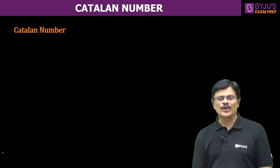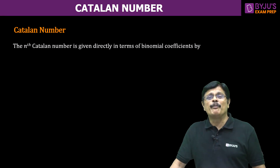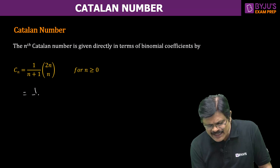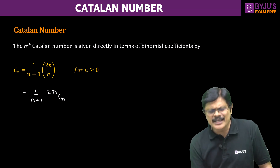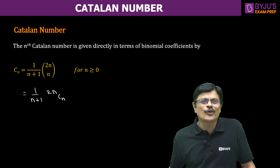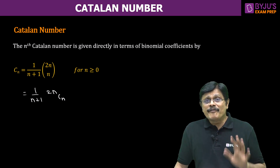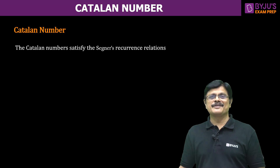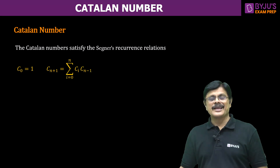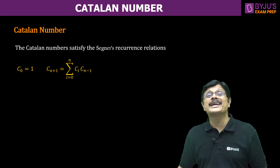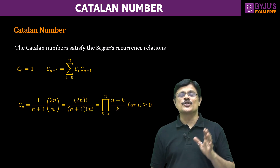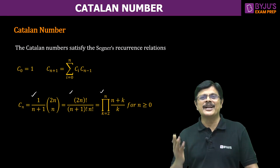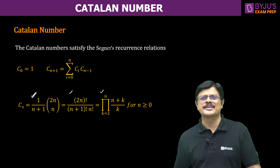Now let us see what is this Catalan number. Catalan number is expressed in terms of binomial coefficients and the nth Catalan number is given by the following formula, which is 1 by (n+1) times 2n choose n. It is a binomial coefficient only, just expressed in different notation. Many problems for which Catalan number is the solution satisfy the following recurrence relation, which is known as Segner's recurrence relation. The solution of this particular recurrence relation turns out to be Catalan number. You can see many versions or variations of the Catalan number, and you can prove that all these are one and the same — just different ways of expressing the same Catalan number. Most of the time we will be using the first variant.